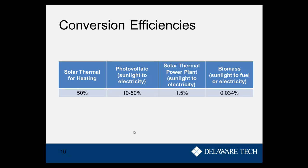What are the conversion efficiencies of these technologies? For heat alone, solar thermal for heating is about 50% efficient. Photovoltaic panels range widely depending on cost — from 10% or lower, up to about 40–45% in lab settings, likely hitting 50% soon. Solar thermal power plants converting sunlight to electricity are around 1.5% efficient. Biomass converting sunlight to fuel or electricity is far worse at just 0.034% efficient. We'll discuss the implications of that.